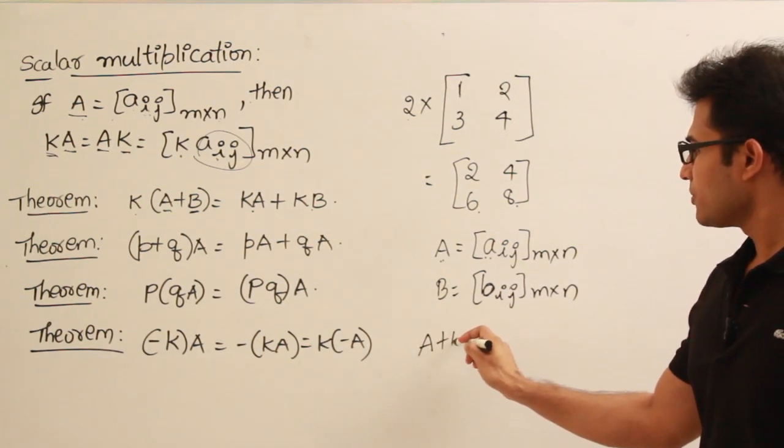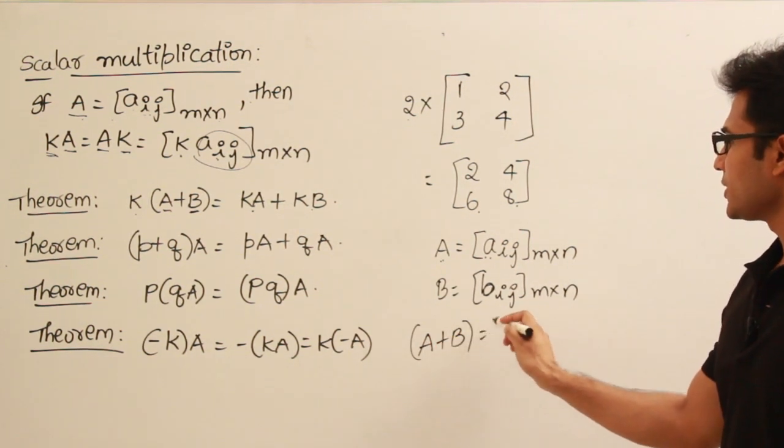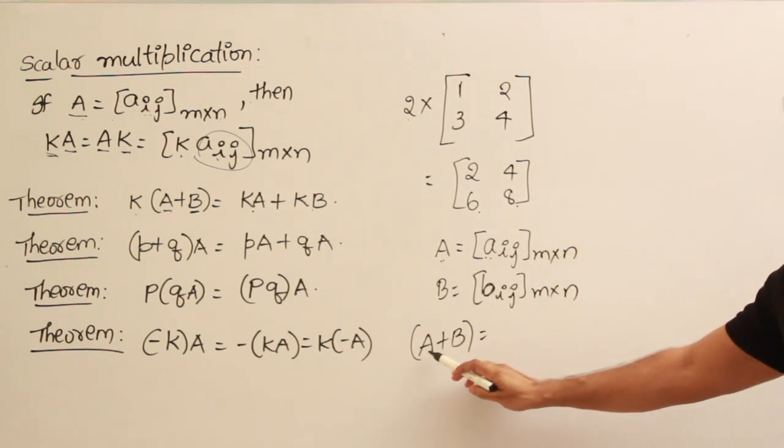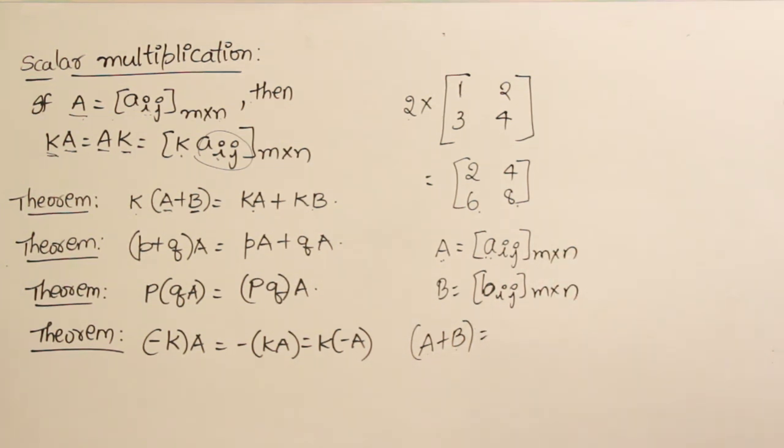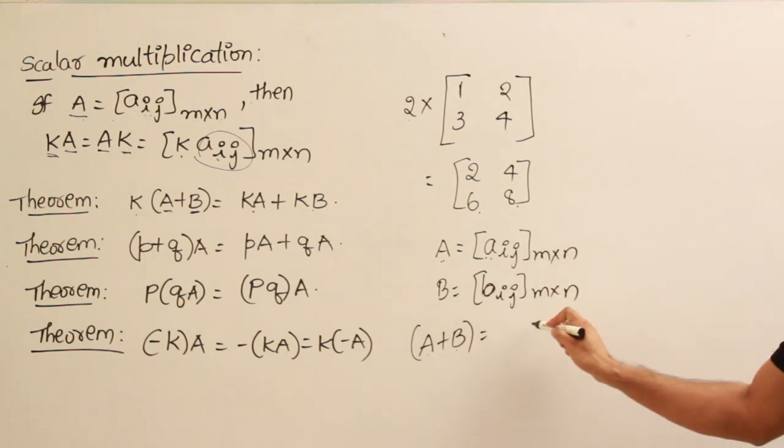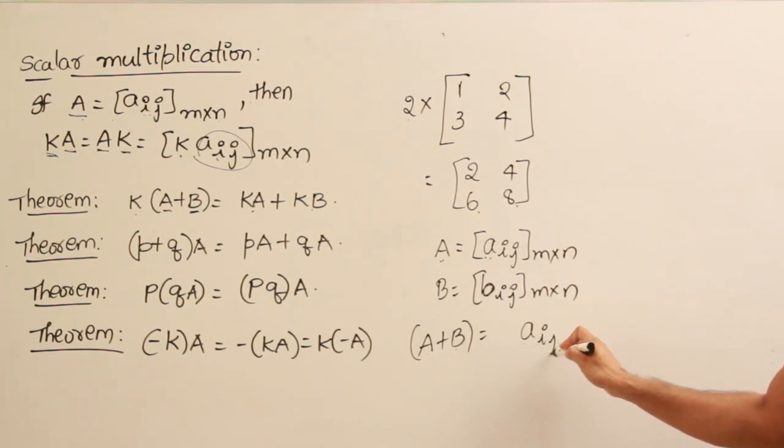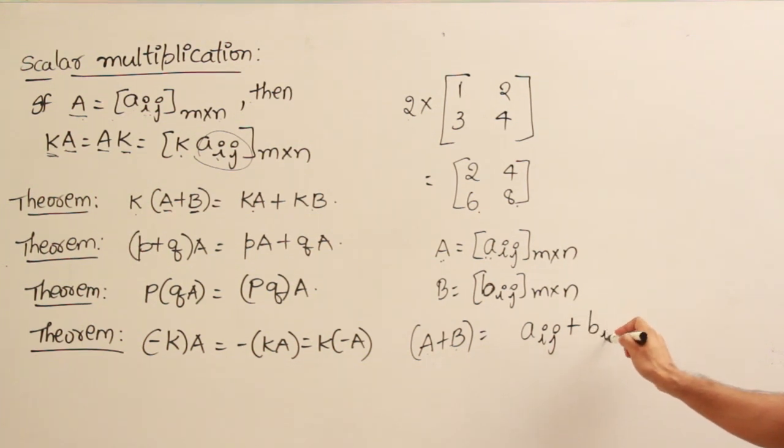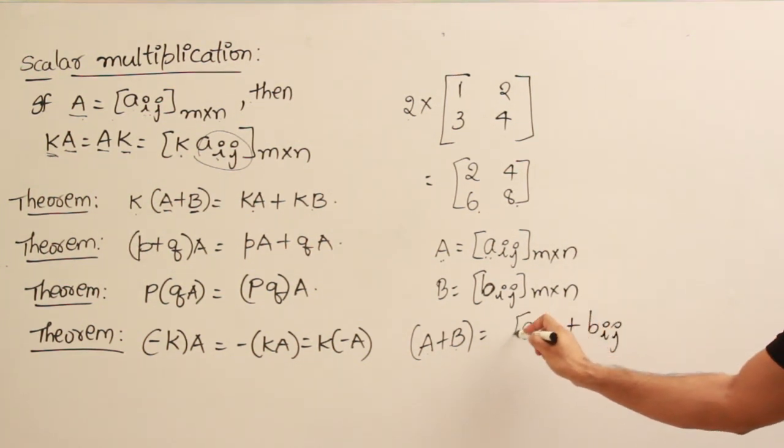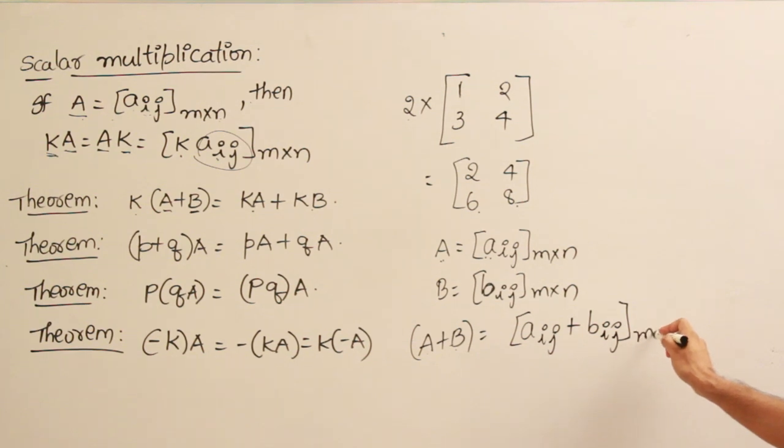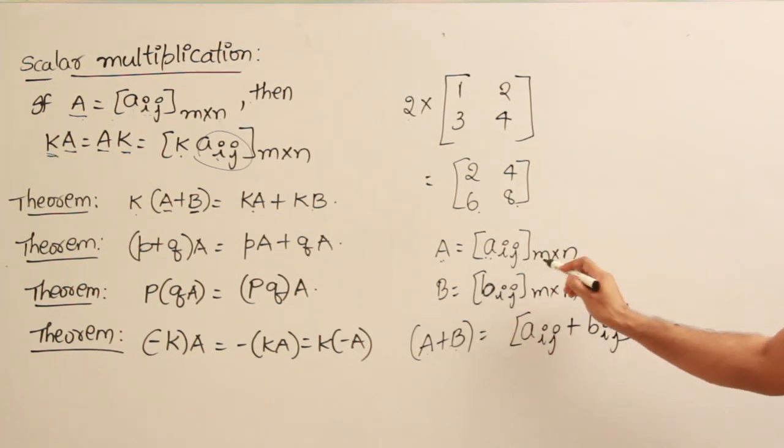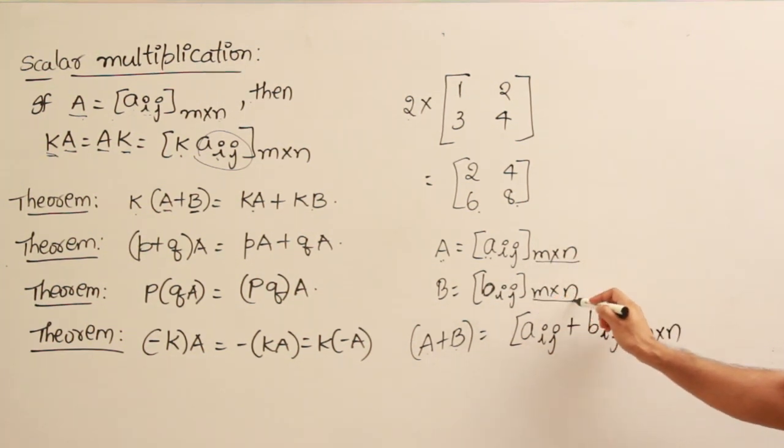Then what do you think about A plus B? How can we write it in terms of this? Adding A and B is nothing but adding the corresponding elements. Therefore, a_ij can be represented like this: A plus B is a_ij plus b_ij. This is the representation of A plus B. If A is of size m by n and B is of size m by n, A plus B will also be of size m by n.